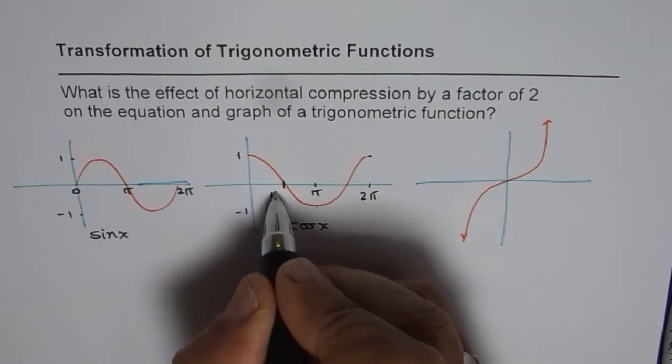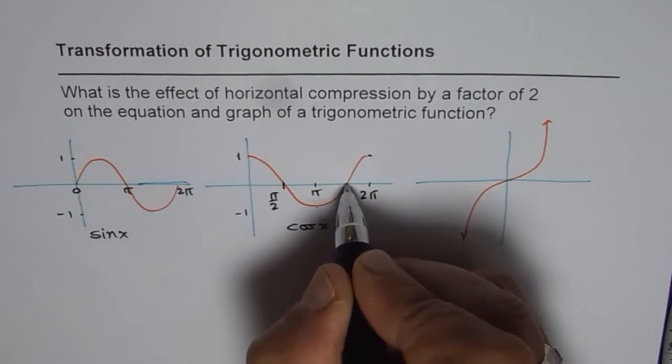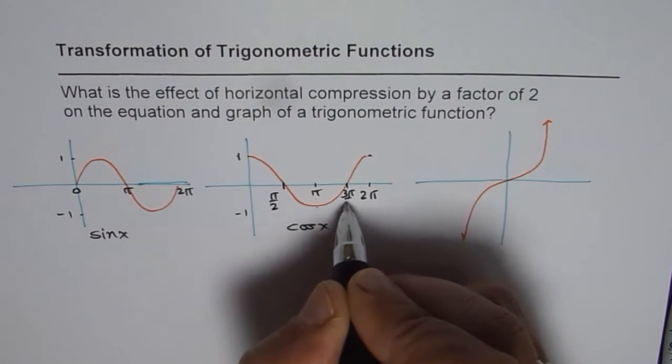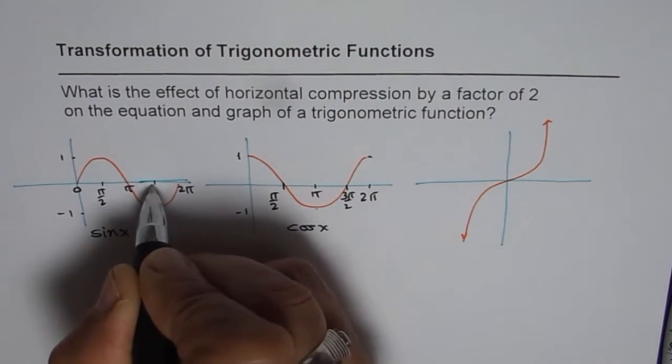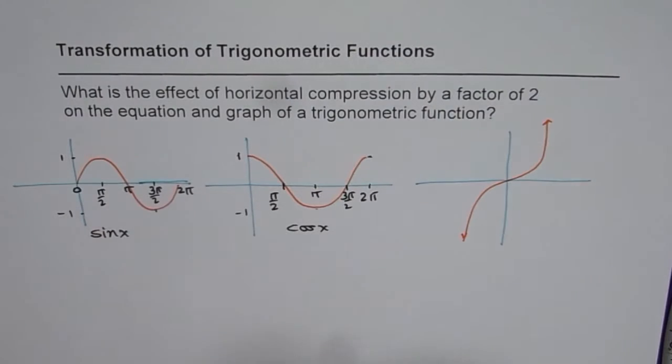So these points, the zeros are at pi by 2 and 3 pi by 2. Here, at pi by 2 we have a maximum and minimum at 3 pi by 2 for cosine function.